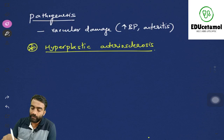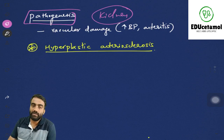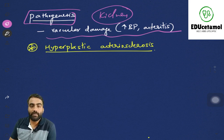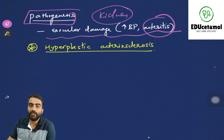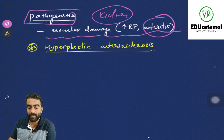Now let us understand what occurs in the kidney. The blood pressure is obviously going to affect the blood vessels — that is vascular damage. Most commonly the vascular damage is because of hypertension, but there are other causes also like arteritis — inflammation of the vessel walls — systemic sclerosis, and diabetes mellitus. Most of the time, nephrosclerosis is because of hypertension only.